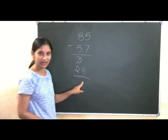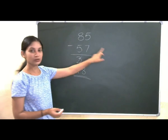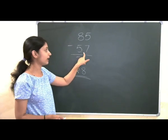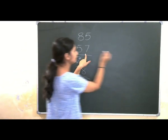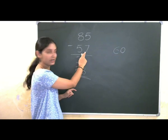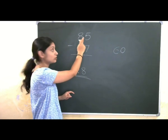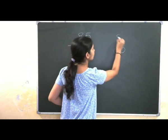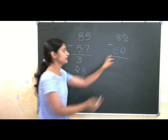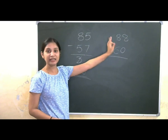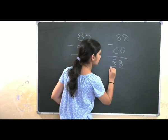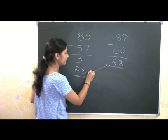Now, I am using one more method. Now, I need to find the nearest multiple of 10 for 57. Yes, that is 60. I need to add 3 here. So, I should add 3 to 85 also. That is 88. I need to subtract. Now, it is easy. 60, 70, 80, 88. That is 28 is the answer. You are comparing the answer.